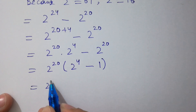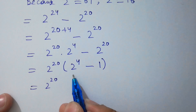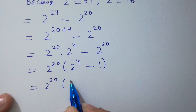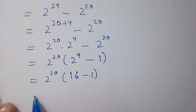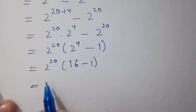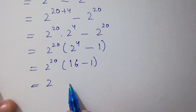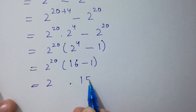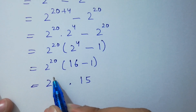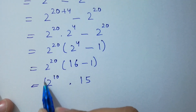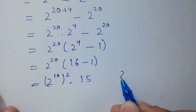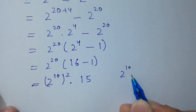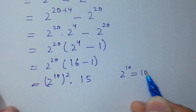Now 2 to the power 4 equals 16, so 16 minus 1 equals 15. And 2 to the power 20 is the same as 2 to the power 10, to the whole power 2. We know that 2 to the power 10 equals 1024.